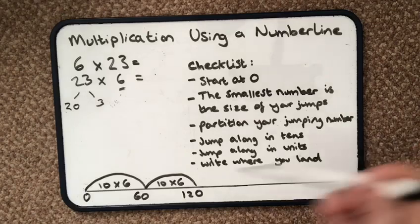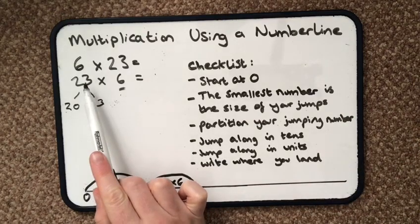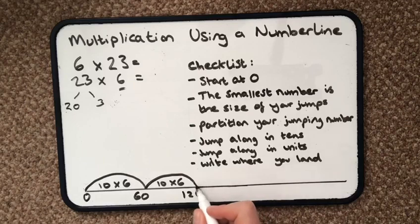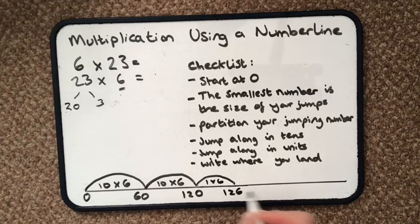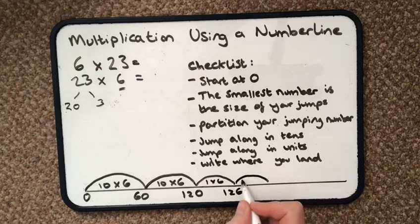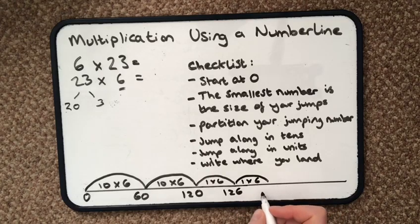Then it says jump along the units, so I have three jumps of six left to do. So I'm going to do one jump of six where I land, another jump of six where I land, so that's going to be 132.